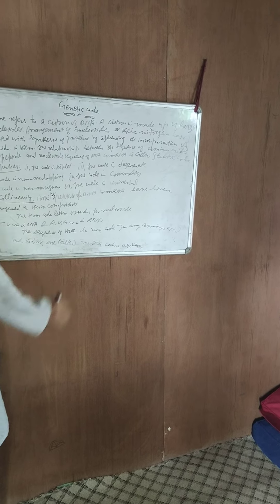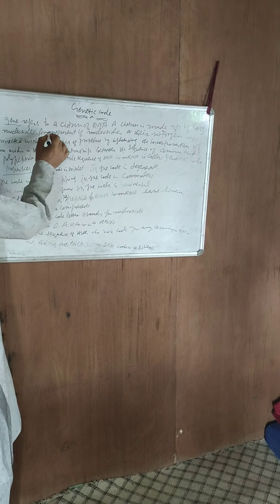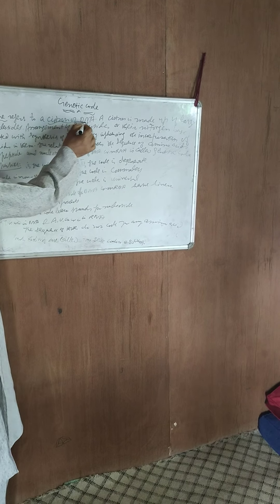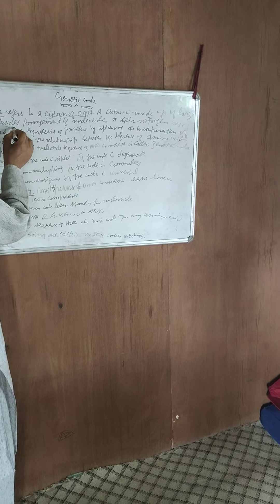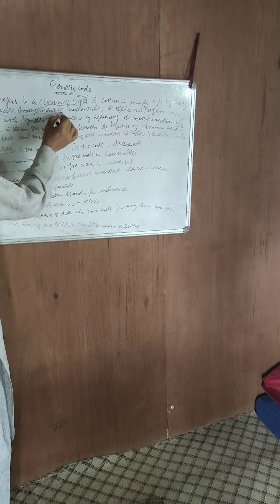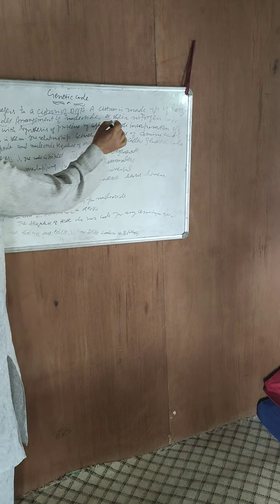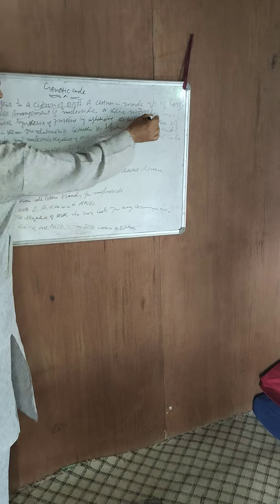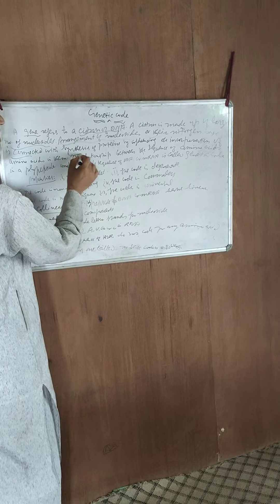Today my topic is genetic code. Genetic code is the gene which refers to the cisteron of DNA. Cisteron is a large number of nucleotides — this is the arrangement of nucleotides in the nitrogen base, connected with the synthesis of proteins.